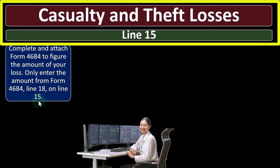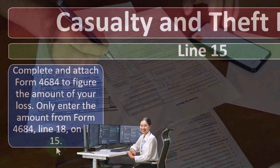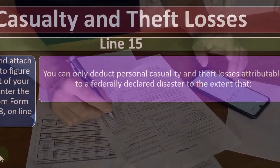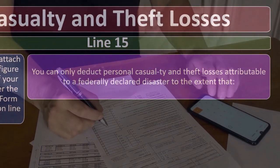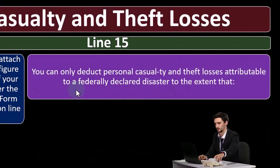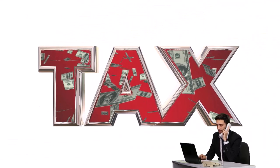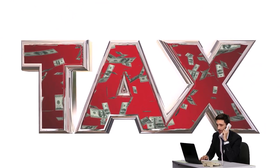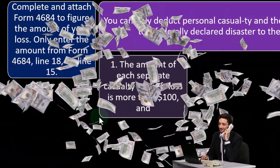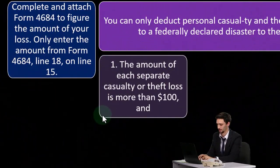Casualty and theft losses — Line 15. Complete and attach Form 4684 to figure the amount of your loss. Only enter the amount from Form 4684 line 18 on line 15. You can only deduct personal casualty and theft losses attributable to a federally declared disaster to the extent that: one, the amount of each separate casualty or theft loss is more than $100. That $100 threshold seems quite low, and it's been there for some time.